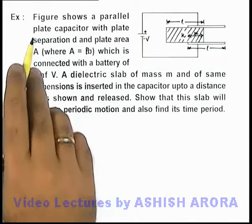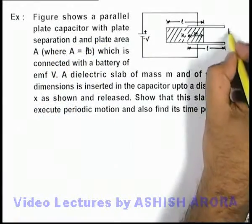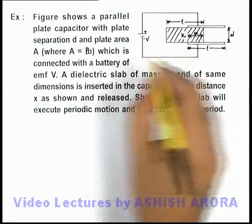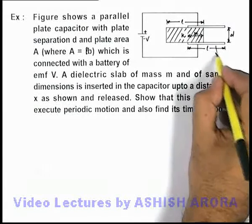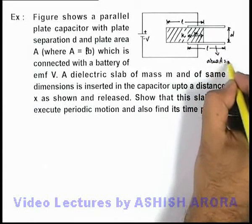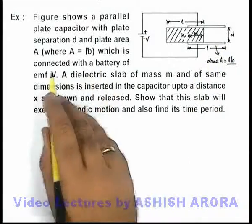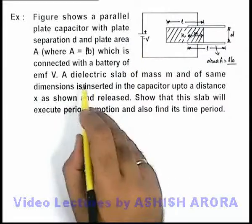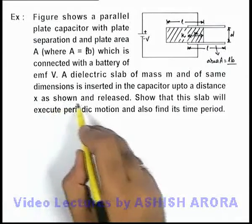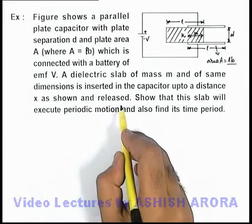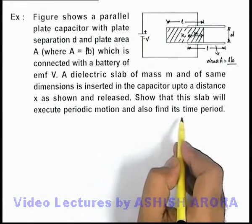In this example, we are given a figure which shows a parallel plate capacitor with plate separation d. The separation between the plates is d and plate area is A, where A equals l times b. Here l is the length of the plate and b is the width of the plates. The capacitor is connected with a battery of EMF v, and a dielectric slab of mass m and of same dimensions is inserted in the capacitor up to a distance x and released. We are required to show that the slab will execute periodic motion and also find its time period.